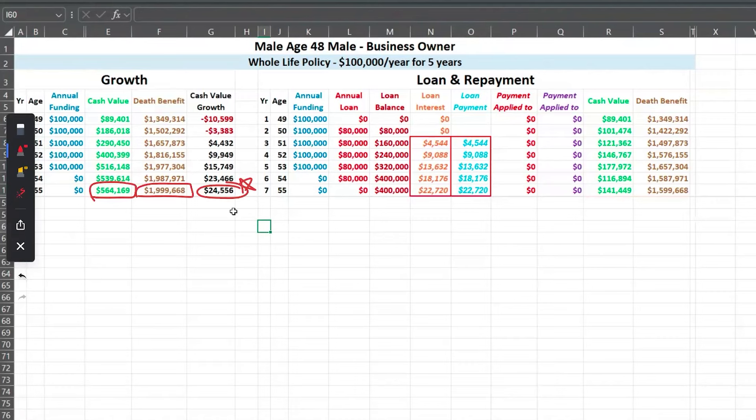You have $400,000 outstanding in loans. Your line of credit or equity is $141,000, so that's what you can access. You have $400,000 outstanding in loans and your death benefit's what? $1.6 million. Without any loans it's $2 million.